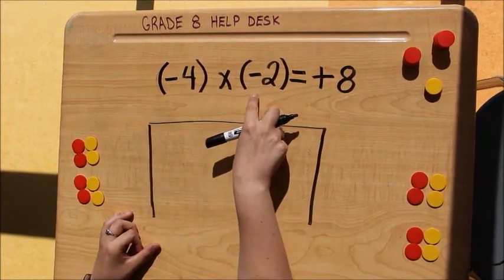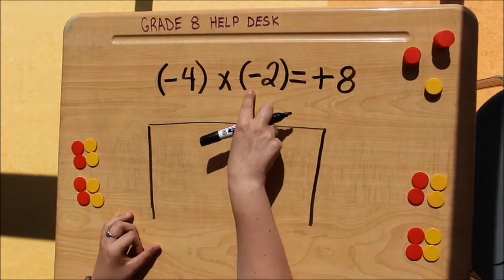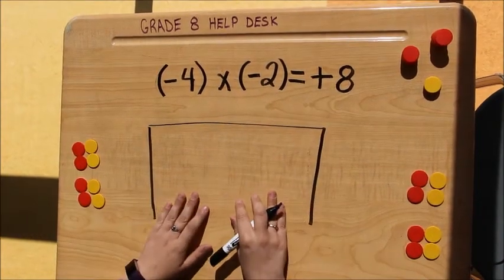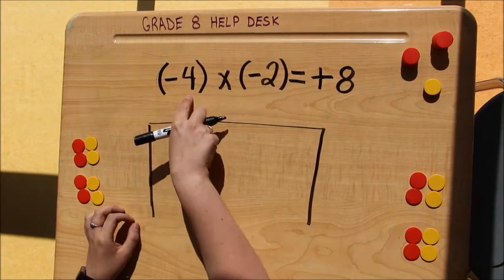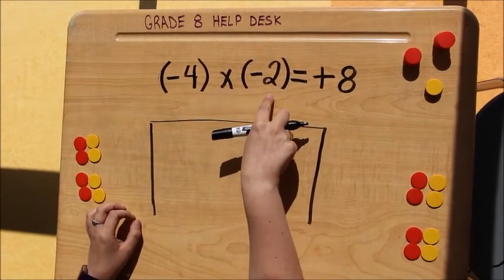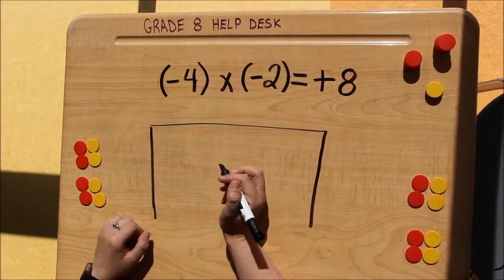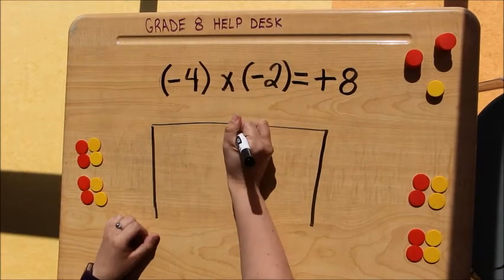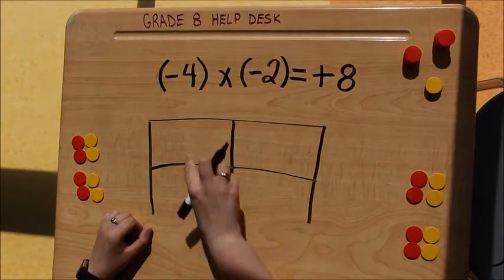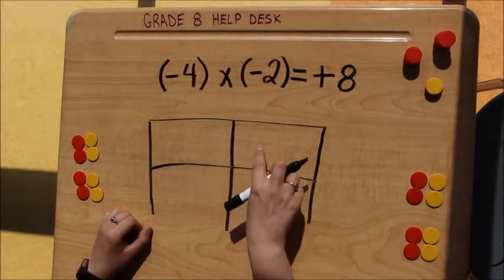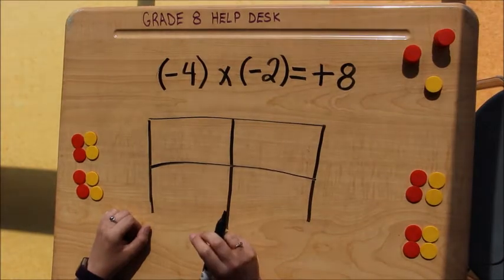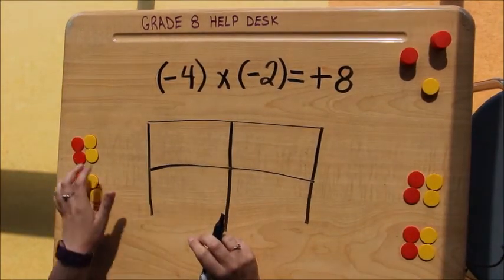That something I'm taking out is 2 of the negative tiles. But I have a problem — right now my bank is empty. So before I take out my 4 groups of negative 2, I need to put something into my bank. I'm going to start by dividing my bank into 4 groups, and in each of those groups I'm going to put in zero pairs.